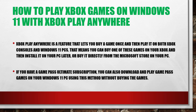Xbox Play Anywhere is a feature that lets you buy a game once and then play it on both Xbox consoles and Windows 11 PC. That means you can buy one of these games on your Xbox and then install it on your PC later, or buy it directly from the Microsoft Store on your PC. If you have a Game Pass Ultimate subscription, you can also download and play Game Pass games on your Windows 11 PC without paying for the games.